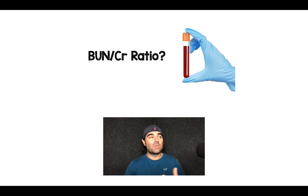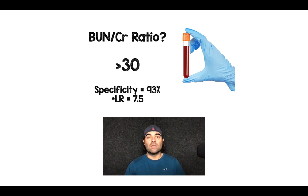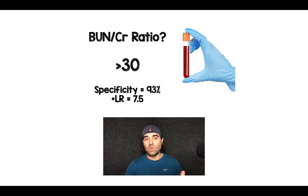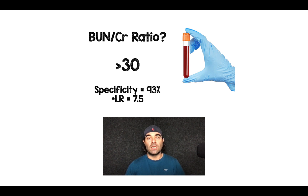BUN to creatinine ratio — this was something I learned in medical school and was on the boards in residency. A BUN to creatinine ratio of greater than 30 has a specificity of 93% and a positive likelihood ratio of 7.5. Anything greater than 10 on that likelihood ratio is a very positive likelihood ratio, so 7.5 is okay but can at least help guide you. If you have a BUN to creatinine ratio greater than 30, just suspect upper GI bleed.